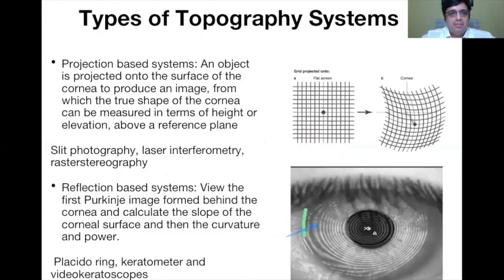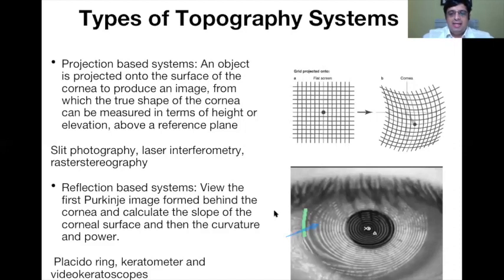The types of topography systems available include projection-based and reflection-based systems. A projection-based system projects a raster grid onto the cornea — comparing the curved corneal image to a flat image allows direct calculation of elevation or height data. In contrast, reflection-based systems use the Purkinje image formed on the anterior corneal surface. Placido-based rings are projected onto the cornea, and the reflected ring positions give us the slope or angulation of each point. From slope, we calculate radius of curvature, and then using mathematical formulae, corneal power. Projection-based systems are not commonly used in clinical practice; reflection-based systems — including Placido rings, keratometers, and video keratoscopes — are more common.